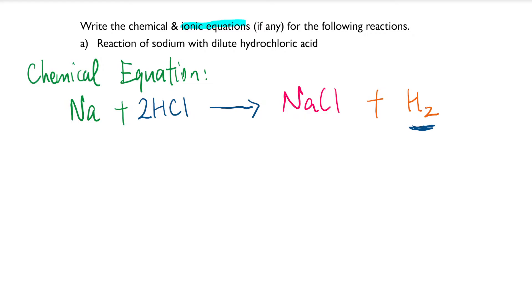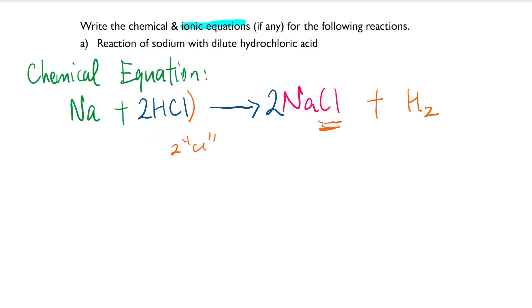Don't forget what this 2 means. Imagine there's an imaginary bracket here — this 2 means 2 times the number of hydrogen atoms and 2 times the number of chlorine atoms. So I now have two chlorine atoms on the left, but on the right-hand side I just have one. That means I also need to add the coefficient 2 on the right-hand side.